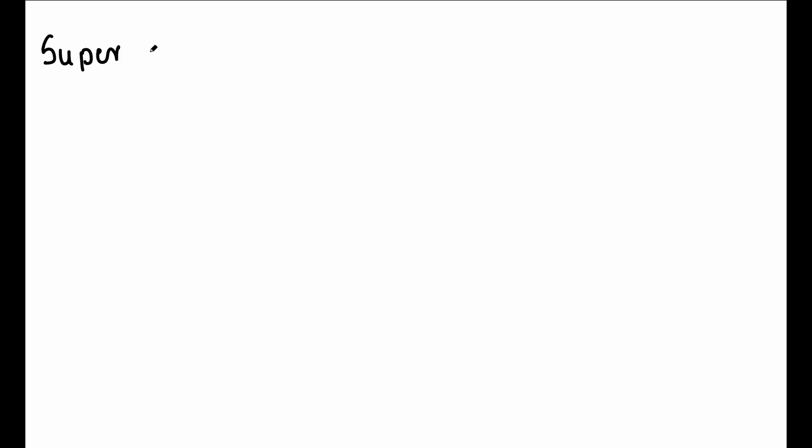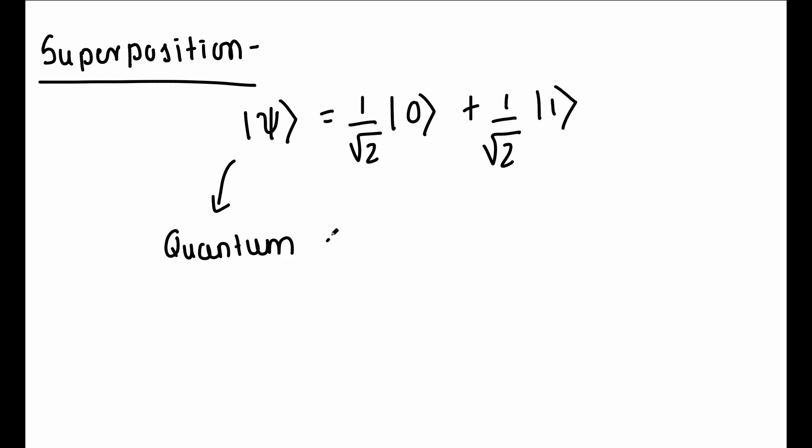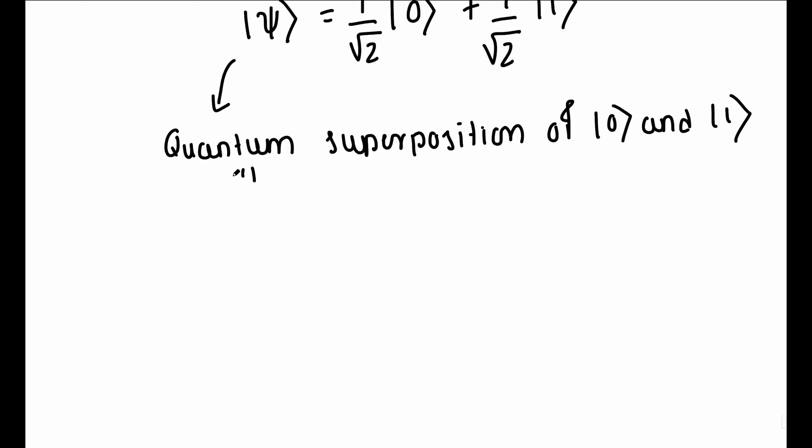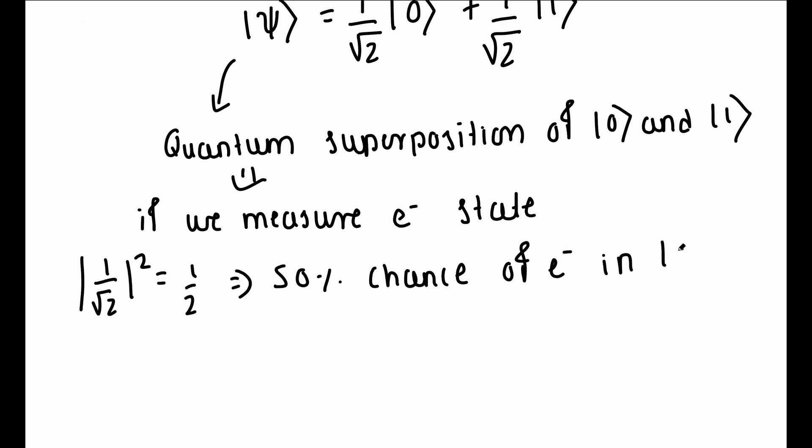When we write ket psi as a sum of states, say ket psi equals 1 by root 2 ket 0 plus 1 by root 2 ket 1, this implies that this state psi is in a quantum superposition. What it means is that when we measure the state of an electron, then there is a 50% chance that the electron is in state ket 0, and 50% chance that the electron is in state ket 1.